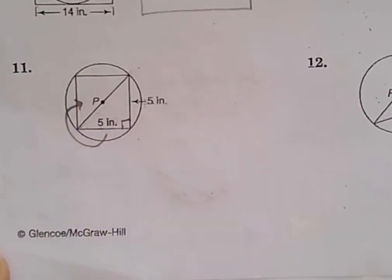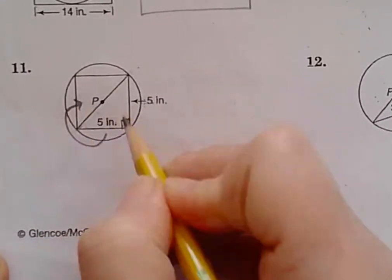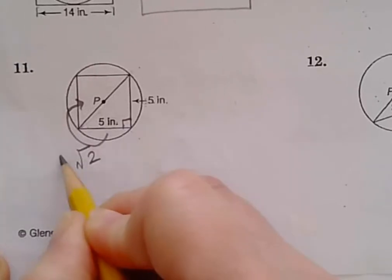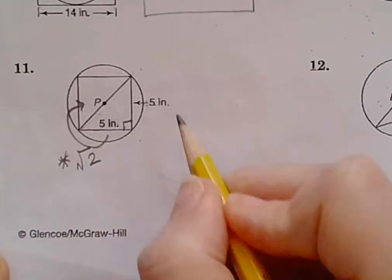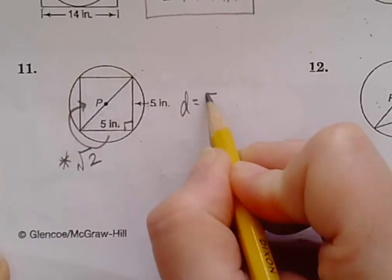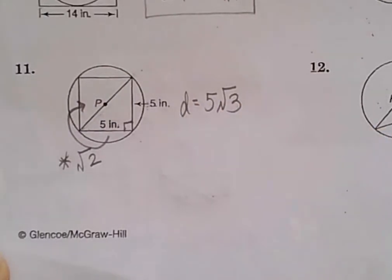And we want to get from the side to the diameter. And the relationship in a 45, 45, 90 is radical 2. We multiply when we go bigger. So your diameter here is equal to 5√2.